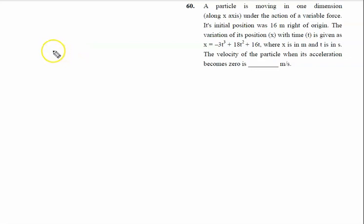A particle is moving in one dimension along the x-axis, in this direction. The particle is moving under the action of a variable force. Its initial position was 16 meters right of the origin.